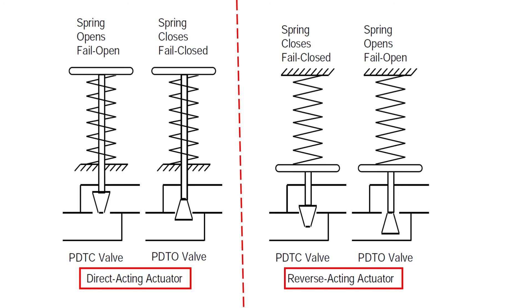This is how we achieve the fail-safe mode in both direct and reverse acting actuators. Looking at the left side — the direct acting actuator — you can clearly see the valve body. In the first figure for fail safe open, the valve plug is shown as an inverted triangle; for fail safe close, the triangle is in normal orientation. This is how the position of the valve plug and body changes to achieve the different fail-safe modes with respect to a direct acting actuator.